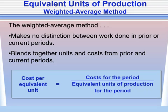When we use the weighted average method, we make no distinction between work done in the prior period and work done in the current period — we blend together the units and costs from both periods. We determine the cost per equivalent unit by dividing the cost for the period by the equivalent units of production.